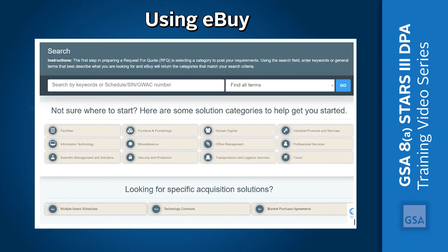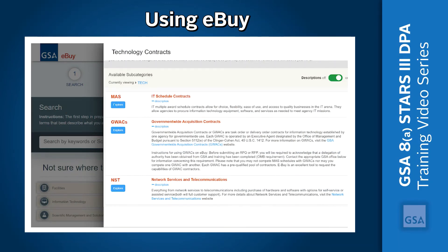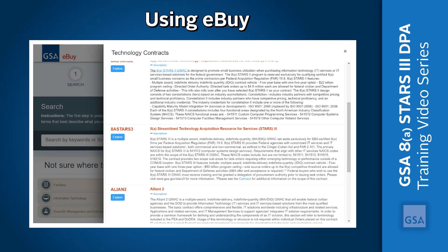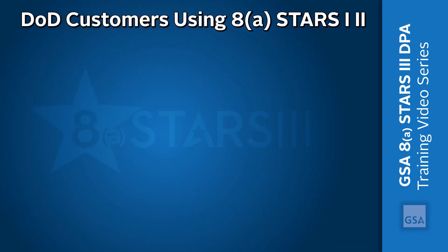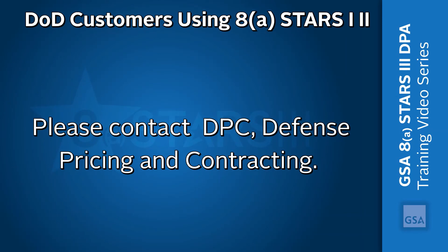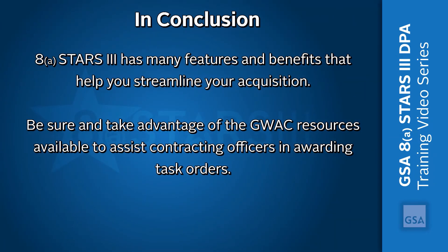It's easy to find 8STARS III on eBuy. Just log in and find Technology Contracts, click on Technology Contracts, click on GWACs, and you'll find the 8STARS III GWAC. Are you a Department of Defense customer? For answers to questions specifically related to DOD's authority to use 8STARS III and other interagency contracts, please contact DPC, Defense Pricing and Contracting. 8STARS III has many features and benefits that help streamline your acquisition.